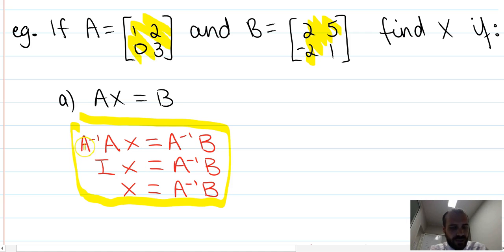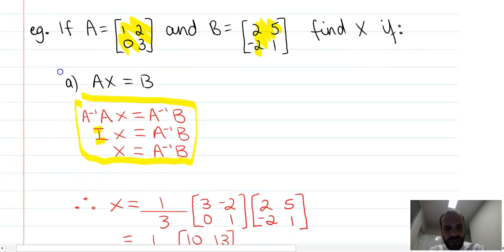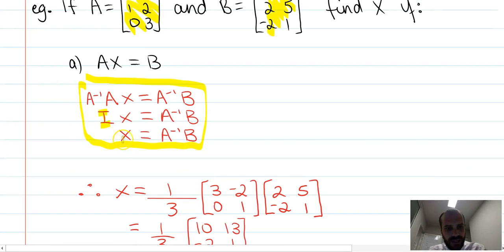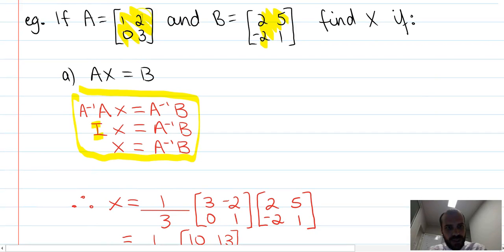Now the inverse of A times A will be the identity matrix times x, and then the identity matrix times x is just x. And now we end up with an answer of the inverse of A times b. So using those exact numbers, we can now say that x will be equal to the inverse of A. Now A was 1 2 0 3, so the inverse of A is going to be—I'll just do that real quick up here—the inverse of A is going to be 3 0 negative 2 1, and then 3 minus 0, so it's going to be 1 over 3.